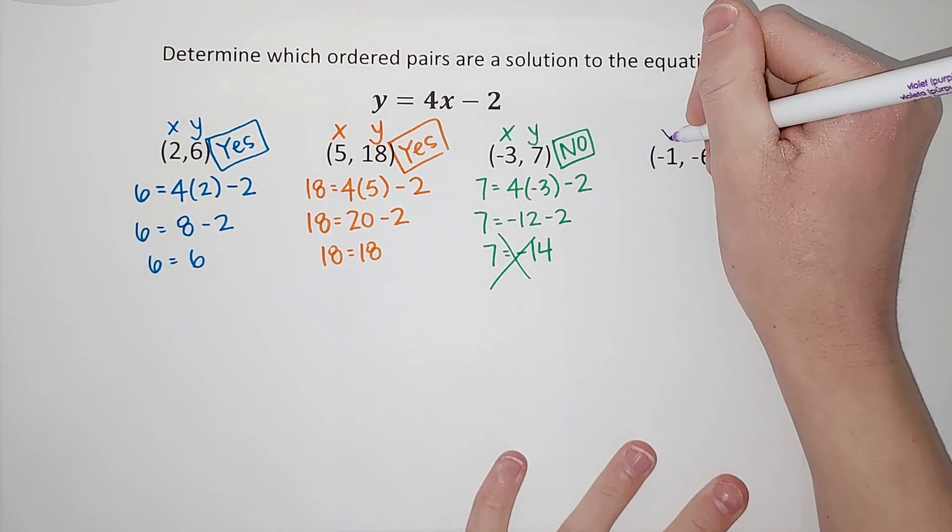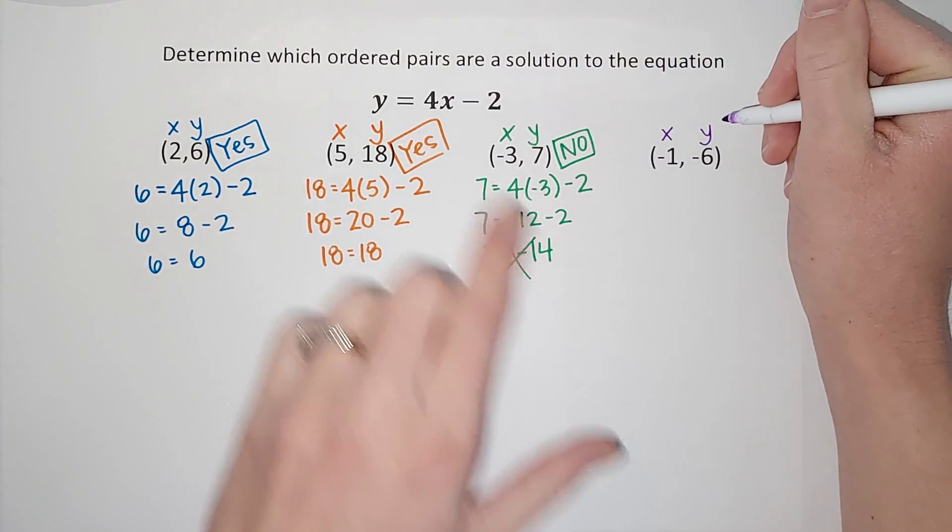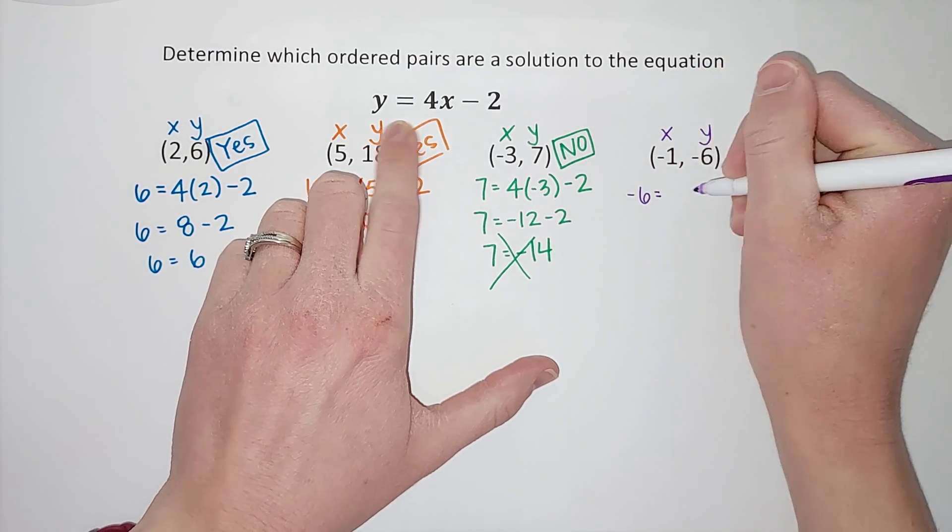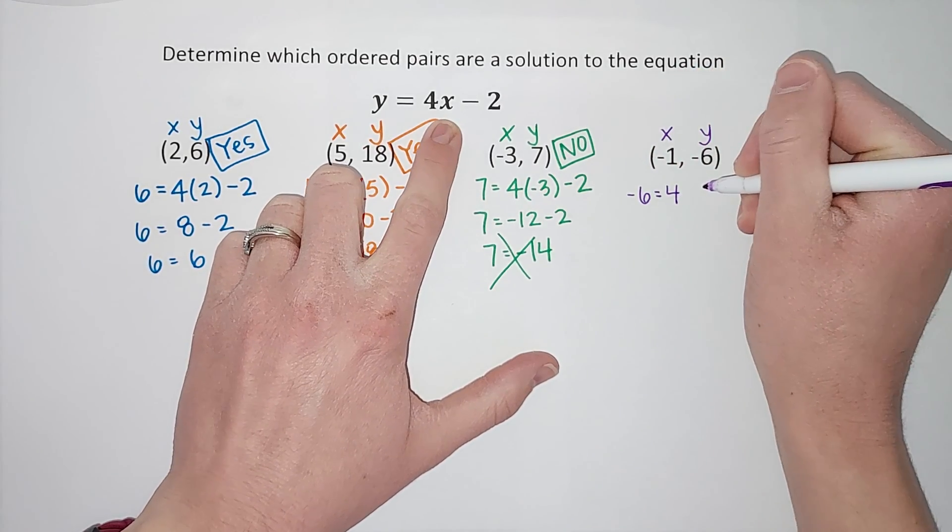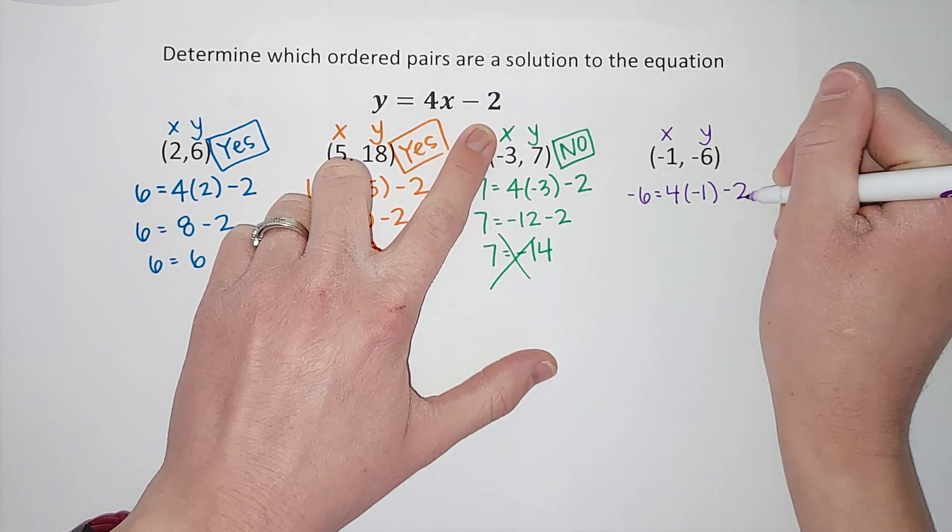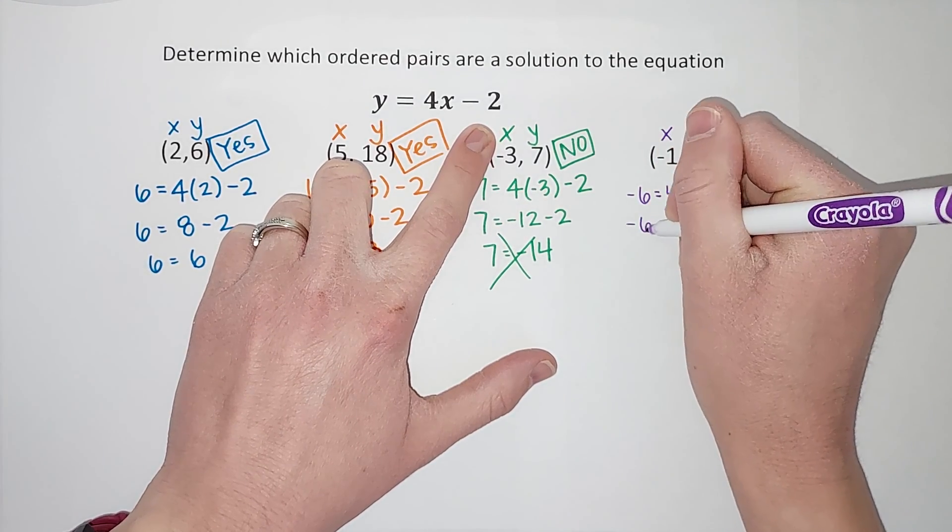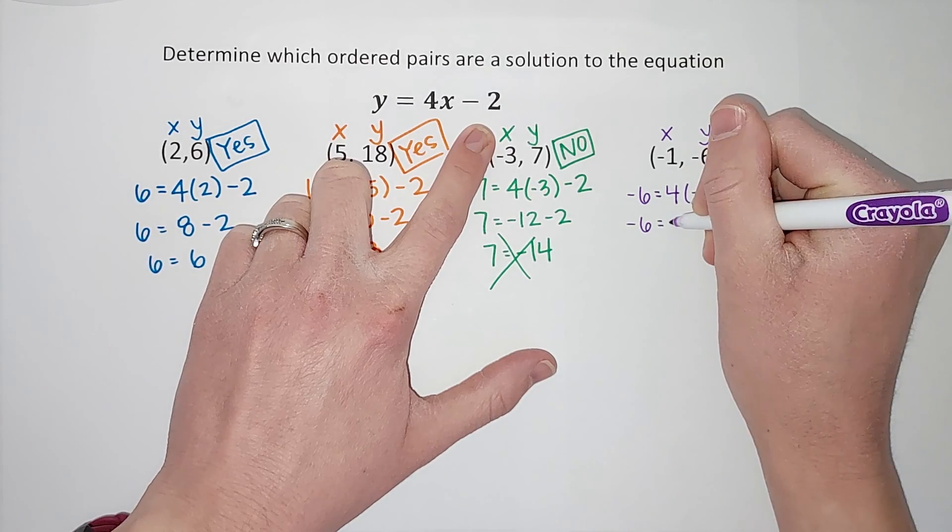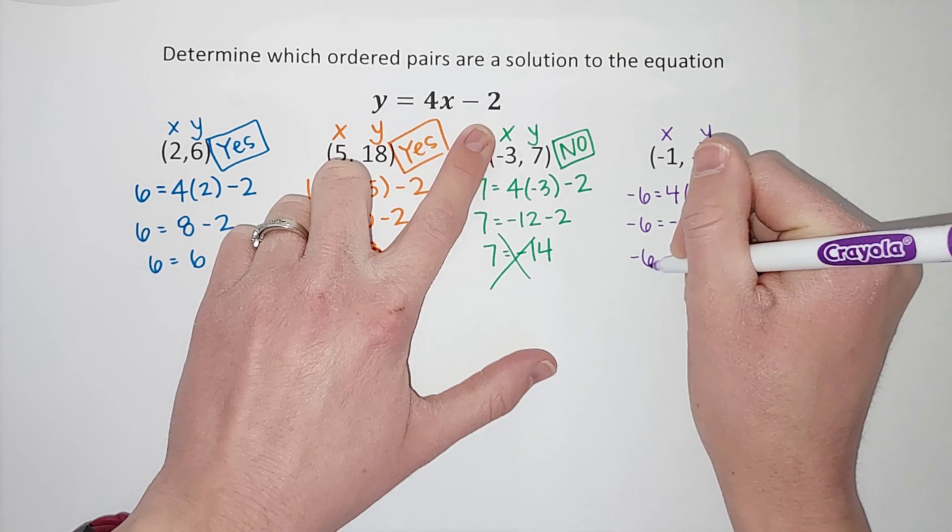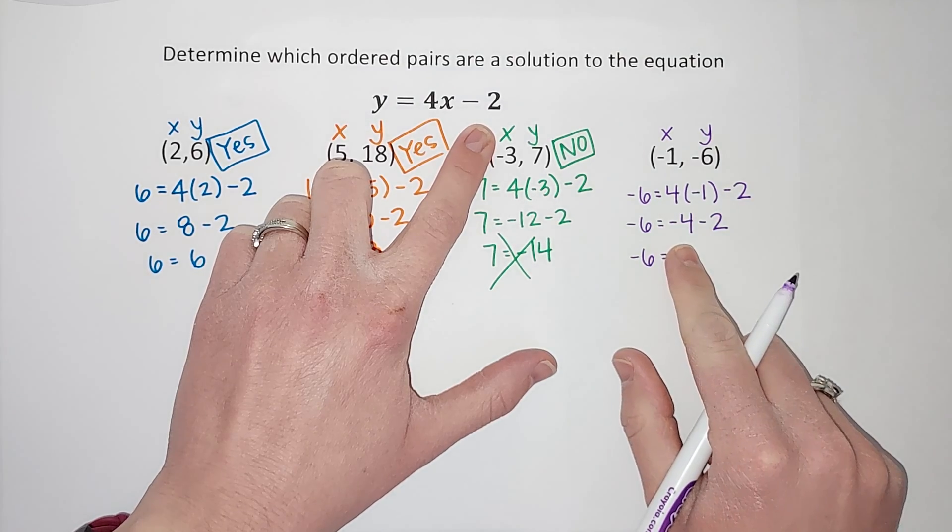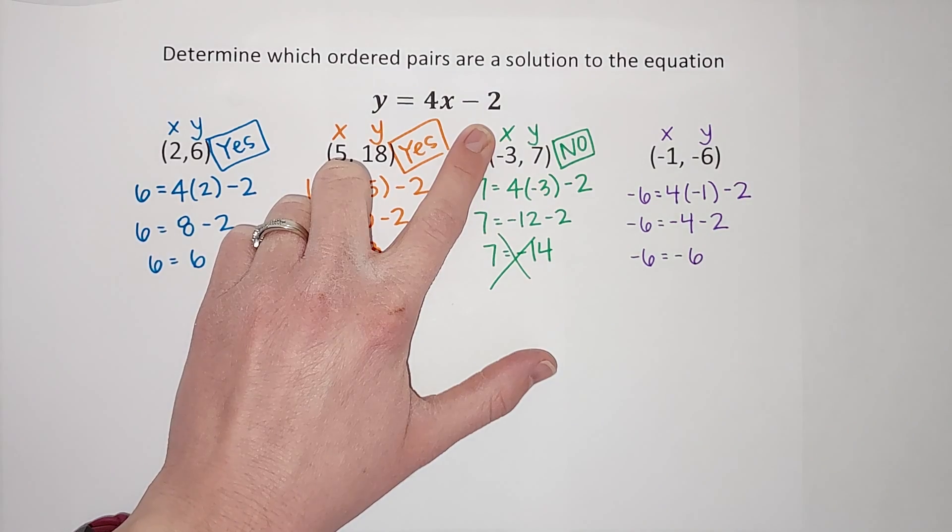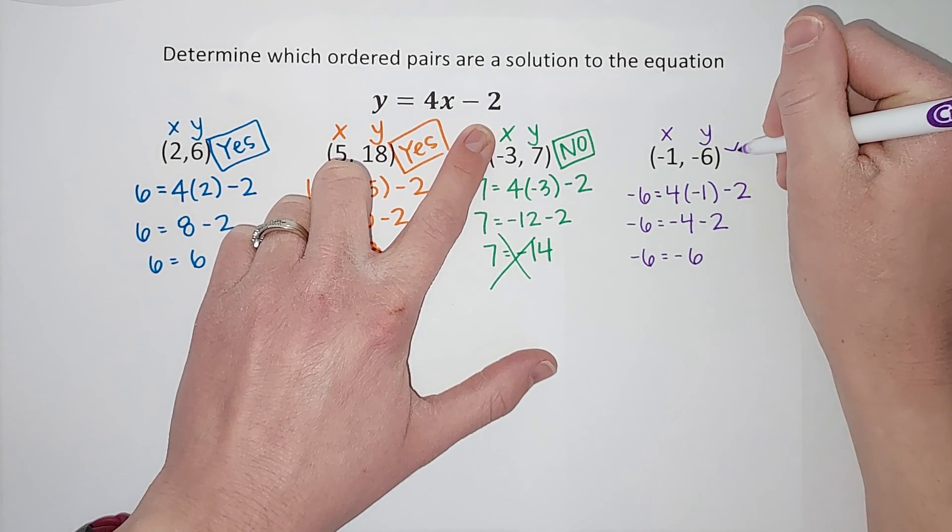So, first one is my x, second one is my y. y equals, so negative 6 equals 4 times x, which we are plugging in negative 1 minus 2. Negative 6 equals 4 times negative 1 gives me negative 4 minus 2, negative 6. Again, this is like, I owe you $4. I borrow two more dollars, so I owe you $6. Negative 6 does equal negative 6, so yes.